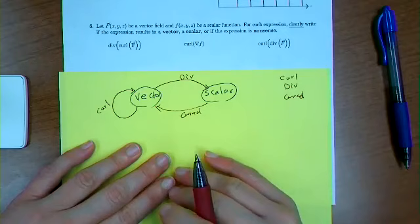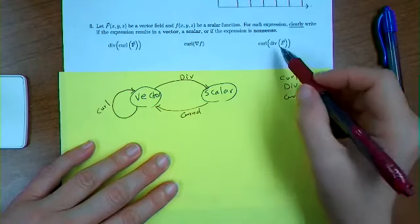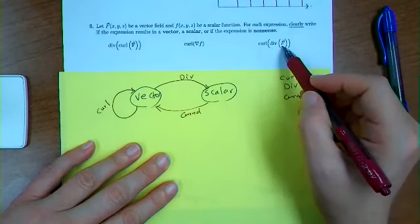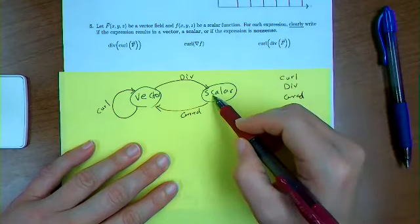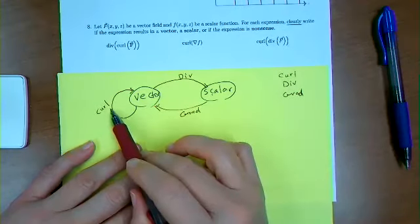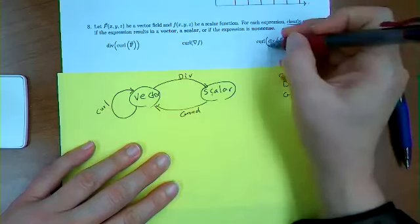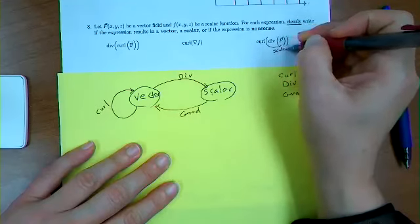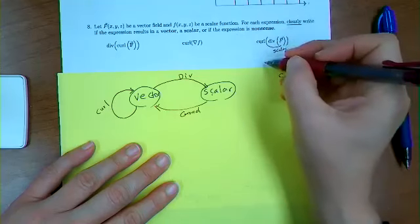So quickly enough, I can see if I have the divergence of f, the output is a scalar, so it cannot be inputted into the curl, basically. This is a scalar, so this is nonsense.